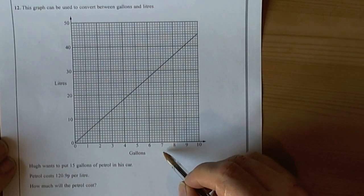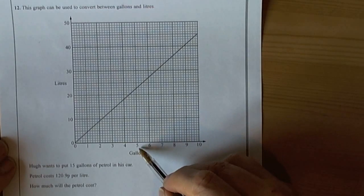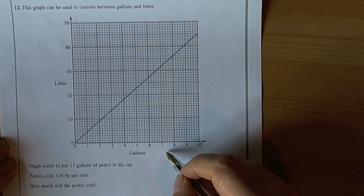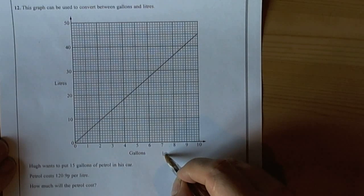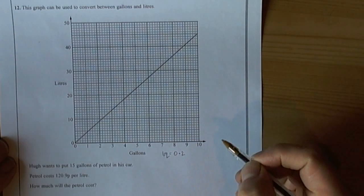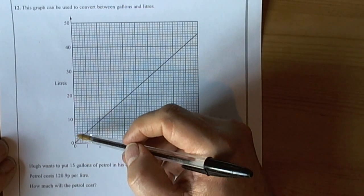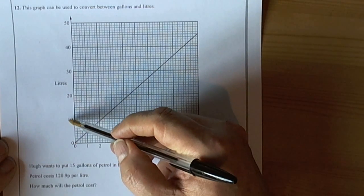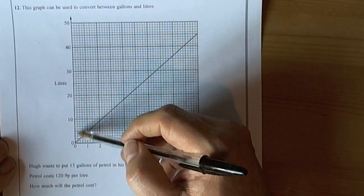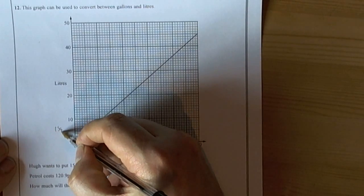So we can see along the gallons scale we've got 5 little squares for each whole one, so each little square is going to be worth 0.2. And on the litres we can see that there are 10 little squares for each 10 litres, so each square is worth 1 litre.